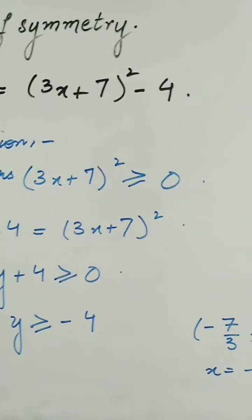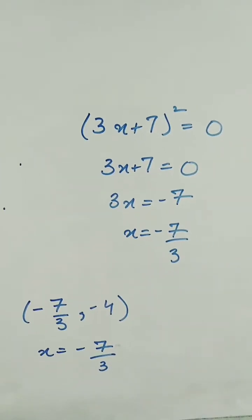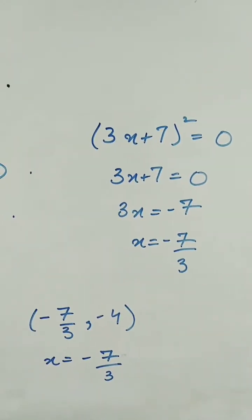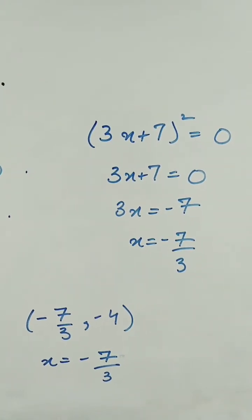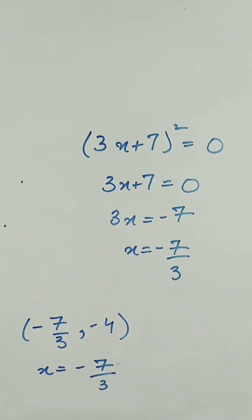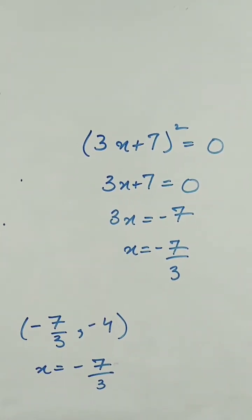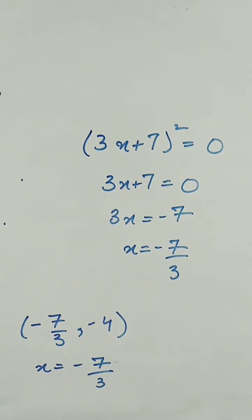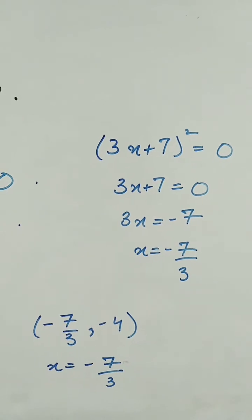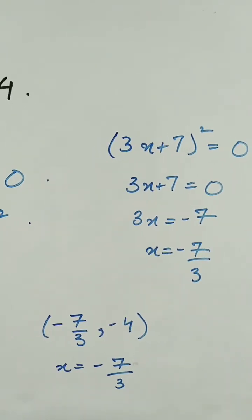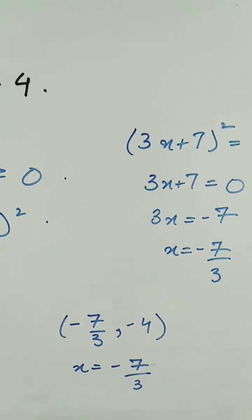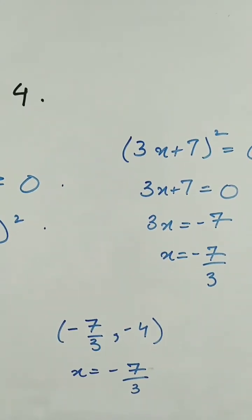In order to find the axis of symmetry, we have (3x + 7)² = 0, or 3x + 7 = 0. As the square root of 0 is still 0, taking the root of both sides gives 3x = -7 and x = -7/3. So the vertex comes out as (-7/3, -4) and the axis of symmetry is x = -7/3.